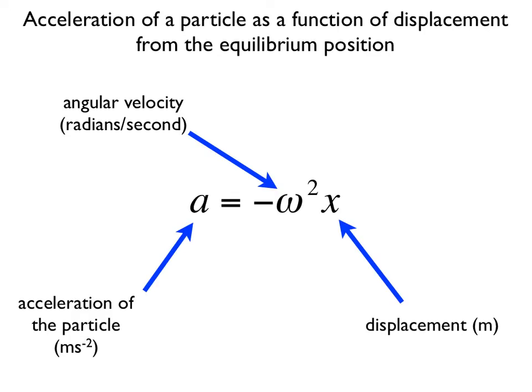As an object in simple harmonic motion moves back and forth, its acceleration reaches a maximum at the extremes of its motion. That's because the force, due to Hooke's law, is at its maximum at the extremes. The acceleration is zero as the object passes through the equilibrium position. This equation allows us to calculate the instantaneous acceleration of the oscillating mass if we know the angular velocity omega and the instantaneous displacement x, which is measured from the equilibrium position.